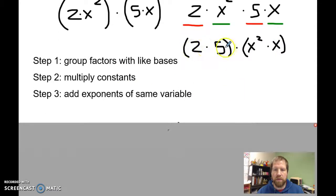Then you're going to multiply the constants, 2 times 5 is 10. And then you're going to add the exponents with the same variable. So this is x squared, this is x, which means it's x to the first, 2 plus 1 is x to the third.